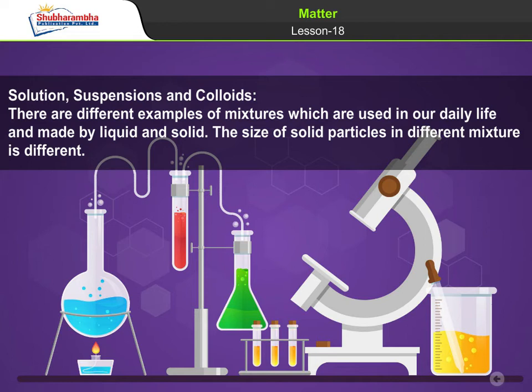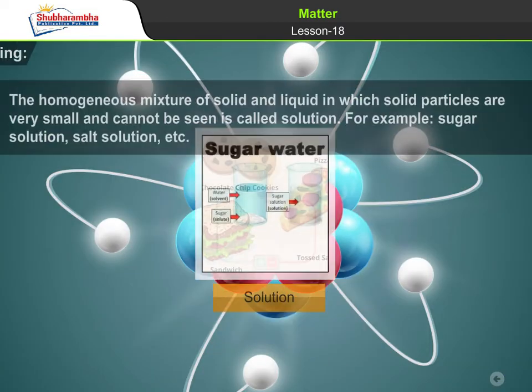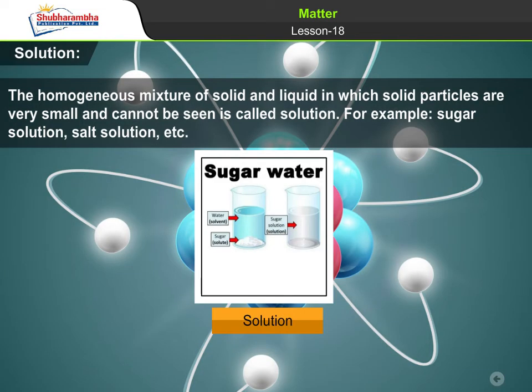Solutions, suspensions, and colloids. There are different examples of mixtures used in daily life made by liquid and solid. The size of solid particles in different mixtures is different. Solution: the homogeneous mixture of solid and liquid in which solid particles are very small and cannot be seen is called solution — for example, sugar solution, salt solution, etc.